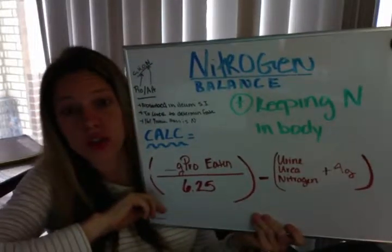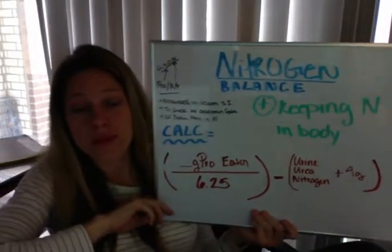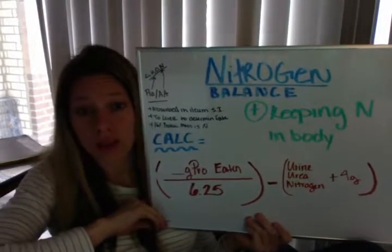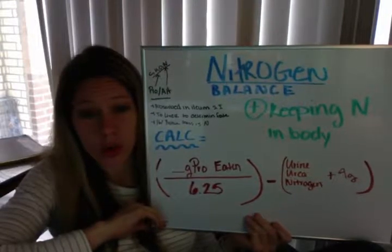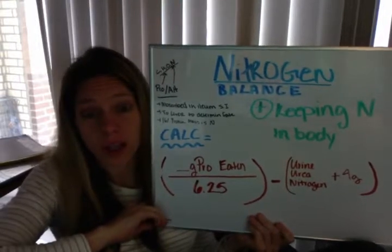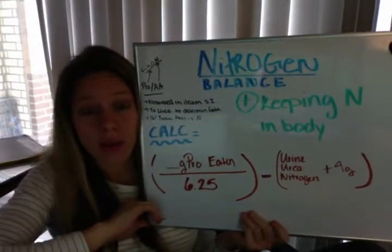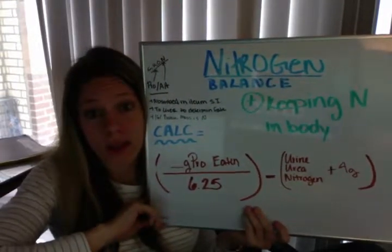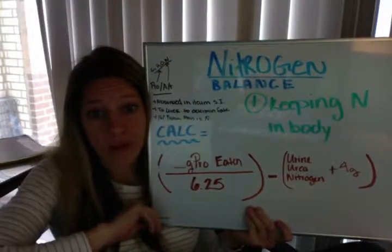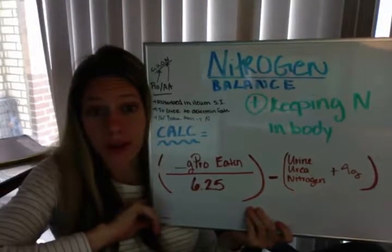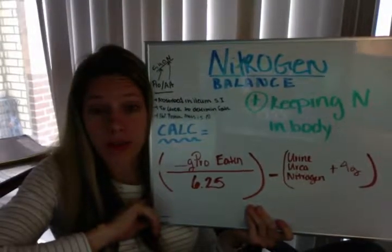Nitrogen balance. What does it mean and why is it important for us to know or to be able to calculate? And what might be some impactors of nitrogen balance that might cause a positive or negative nitrogen balance?